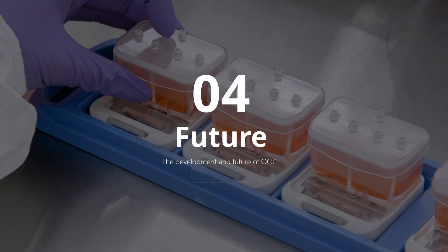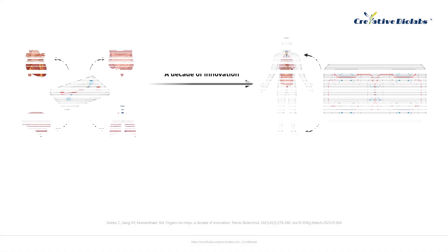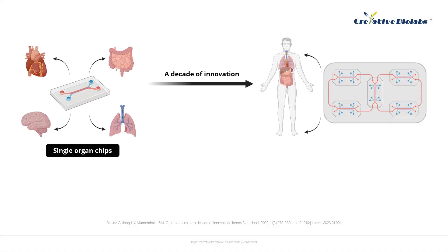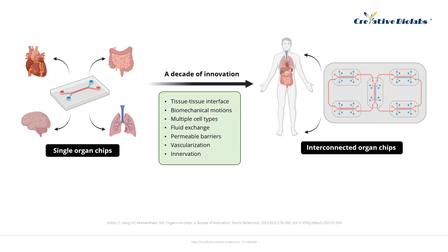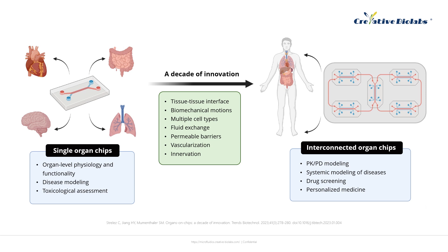The fourth part summarizes the development and future direction of OOC. The left image shows a single organ chip, while the right image depicts interconnected organ chips. General OOC functionality is summarized in the green box, while the blue box highlights the application scope. Single organ chips can perform toxicological assessments of physiological and functional disease models at the organ level. Interconnected organ chips can undertake more intricate PK or PD modeling, disease system modeling, drug screening, and personalized medicine.